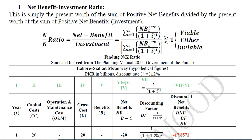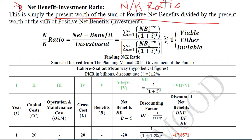In this video we will learn about the third discounted measure of project worth, which is known as the Net Benefit Investment Ratio, also represented with the acronym NBIR. Simply speaking, it is the present worth of the sum of positive net benefits divided by the present worth of the sum of negative net benefits — and the denominator should be negative, so we must not be mistaken.